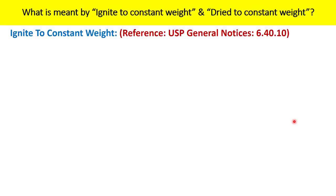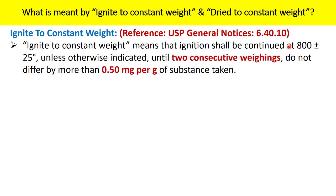The first one is ignite to constant weight. What is meant by ignite to constant weight in case you are conducting residue on ignition testing? The reference is USP General Notices 6.40.10. According to this General Notices, ignite to constant weight means that ignition shall be continued at 800 plus or minus 25 degrees Celsius, unless otherwise indicated, until two consecutive weighings do not differ by more than 0.50 milligram per gram of the substance taken.